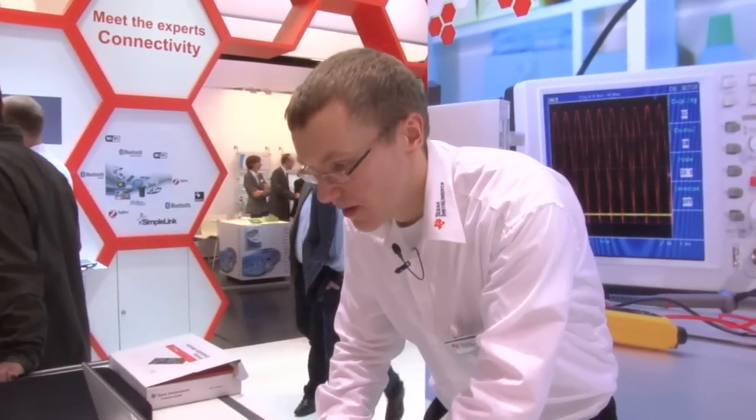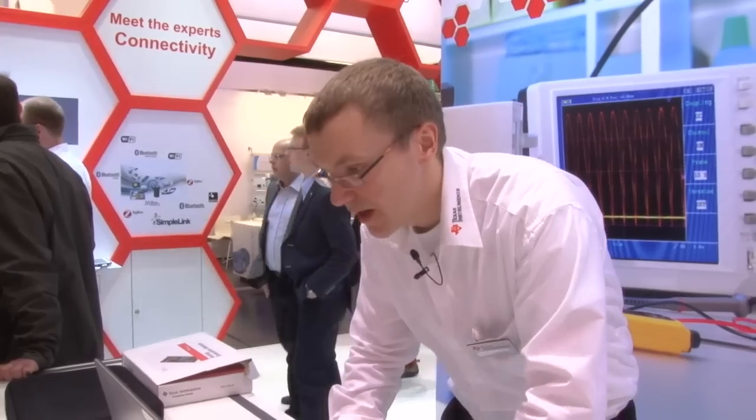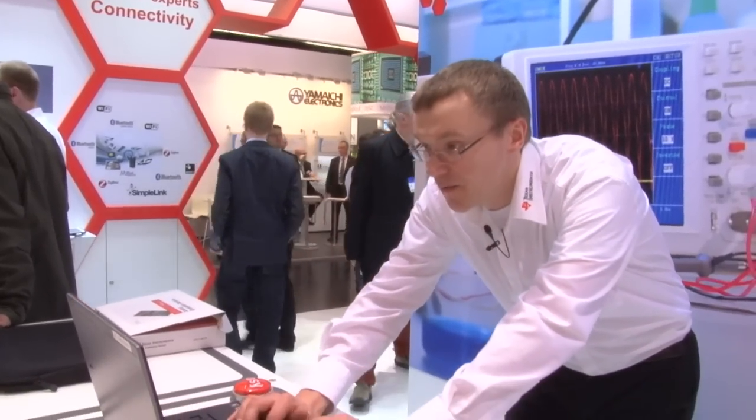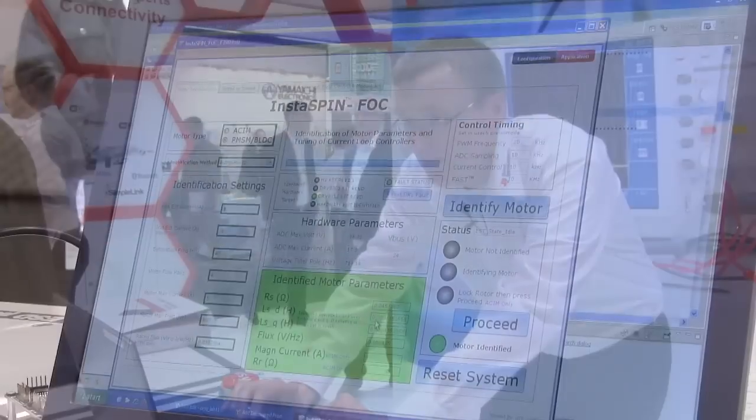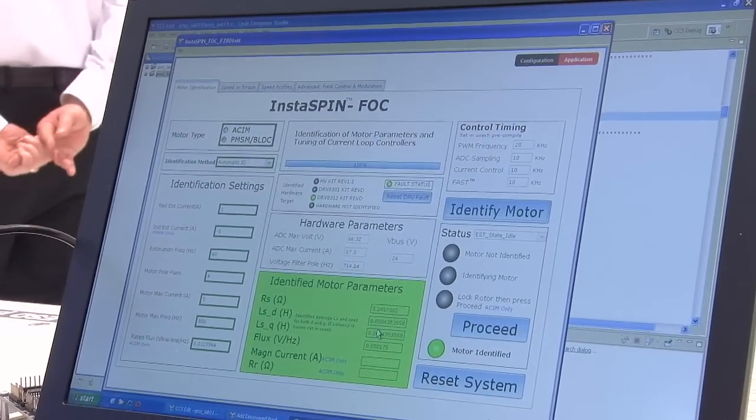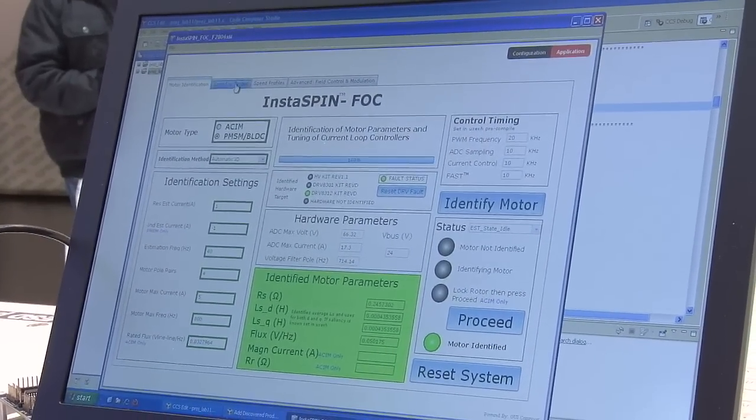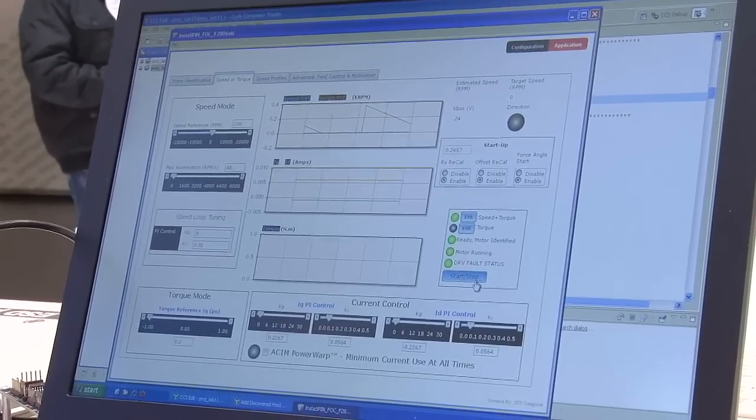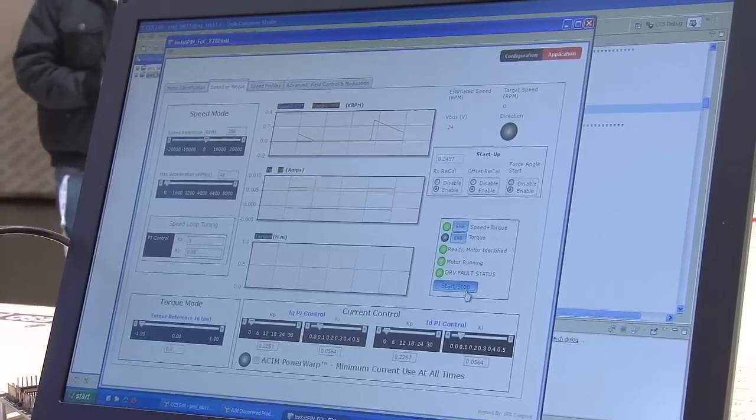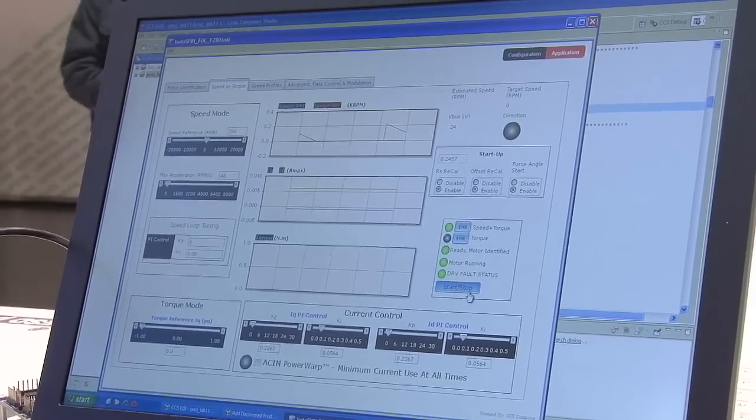So now we see that the identification is done. You see that the motor is identified and now you have the option of going into the speed and torque mode. So here you see that we do a cascaded control with a speed controller first and then a torque controller and then we generate the magnetic field that we need.